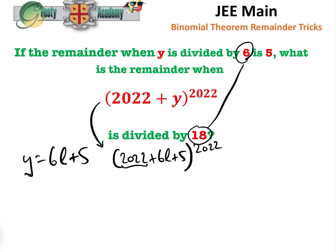Now, we know that 2022 is a multiple of 6 because it's an even number and when we add up all the digits, it's divisible by 3. So we know it's divisible by 6, so we can rewrite that as (6m + 6l + 5)^2022, which equals (6n + 5)^2022.